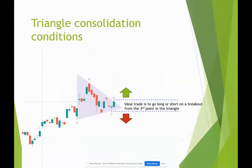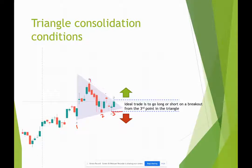The ideal trade, if you're going to do a directional, is to go long or short on a breakout from the third point in the triangle. So you can see that we had one, two, three — that's the breakout level. You don't want to trade this if you think you're getting a breakout on a candle that's down here, because you haven't really surpassed that lower high. You want to get past that lower high, or you want to get past that higher low on the other side.